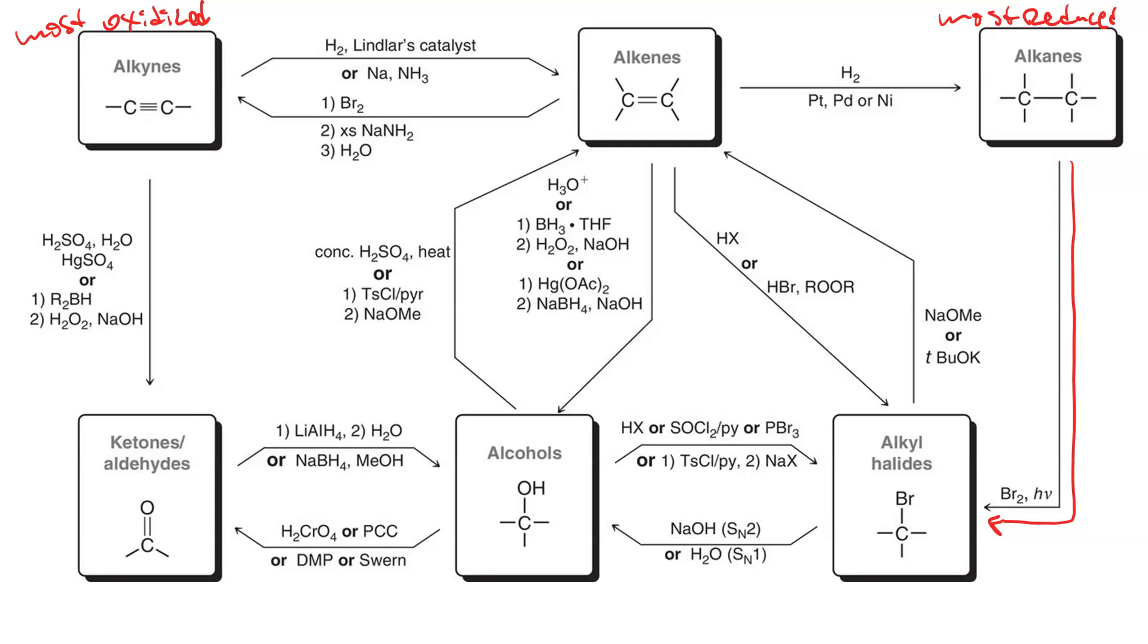And then we have ways of going from an alkyl halide to an alcohol, or from an alcohol back to an alkyl halide. The two new reactions we learned in this chapter are thionyl chloride and phosphorus tribromide. That'll take an alcohol to an alkyl chloride with thionyl chloride or to an alkyl bromide with phosphorus tribromide.